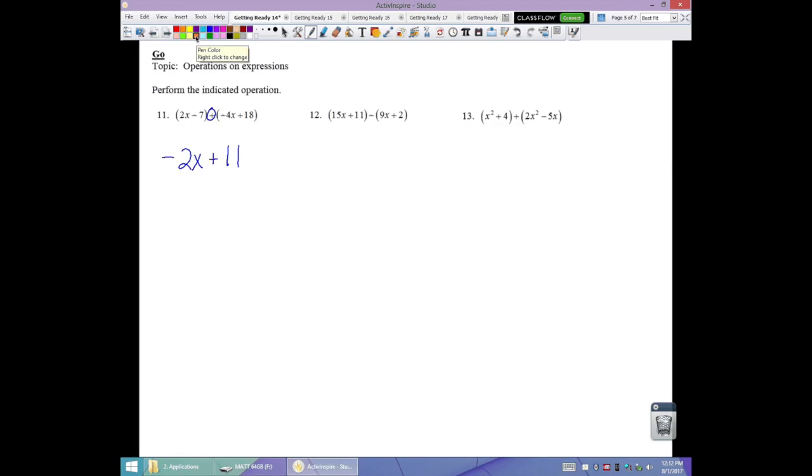Number 12, with the subtraction between the two polynomials, tells me I got to do that one extra step because I've got to change all the signs in the second parentheses. The polynomial that follows the subtraction sign has to change. So, I'm going to take the time and the effort to rewrite this. It will be worth it. 15x plus 11 and this becomes minus 9x minus 2. So, then 15x minus 9x is 6x. 11 minus 2 is positive 9.